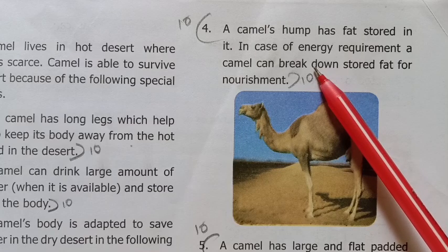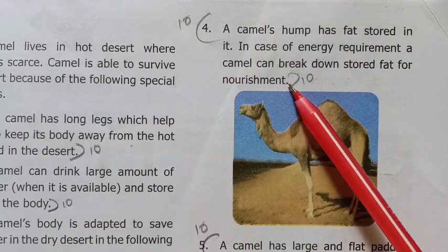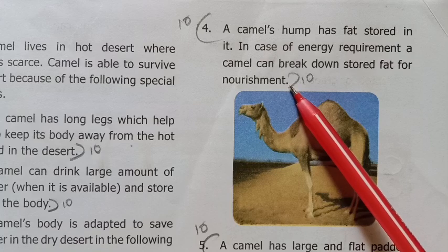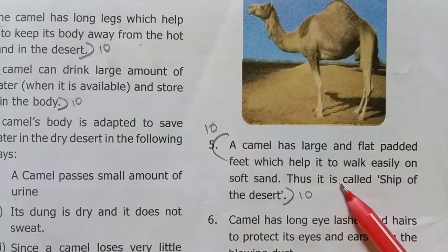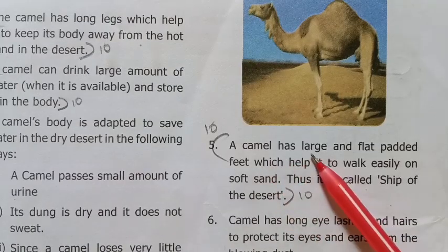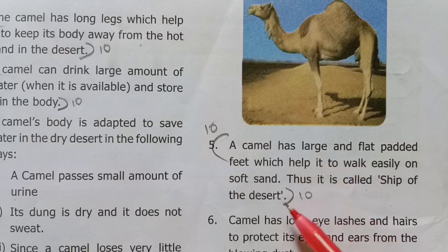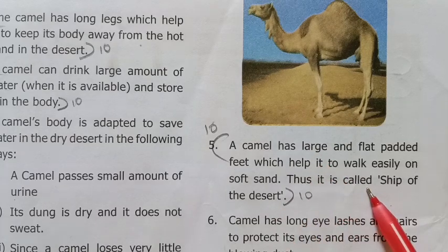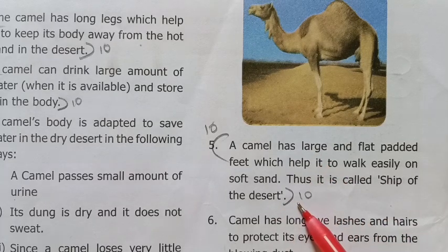Fourth point: the camel's nourishment — write that point. Fifth point: start from the camel's features. Last line: it is called the ship of the desert.